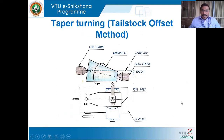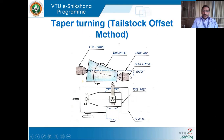The taper turning operation by swiveling the compound rest is now clear. The next operation is taper turning by tailstock offset method — also known as the set-over method. In the previous case the tool was inclined to the axis, whereas in this case the workpiece itself is inclined to the axis of the lathe. The tailstock is shifted to the adjacent guideways on the lathe bed. When the tailstock is shifted from its initial position to the adjacent guideway, an inclination is automatically produced. The job is held between a live center and a dead center, and when the entire tailstock is offset, you can see the angle generated.